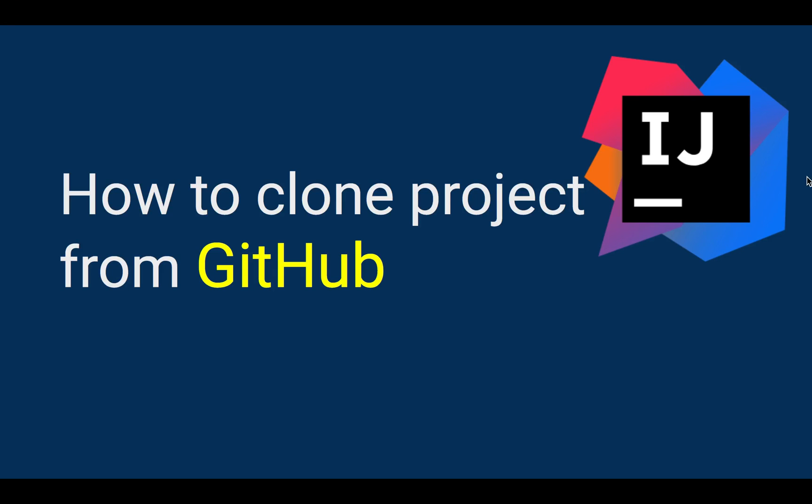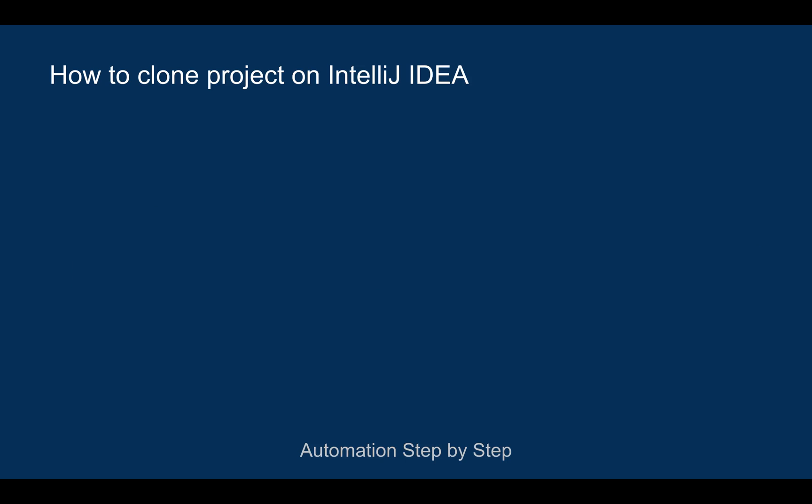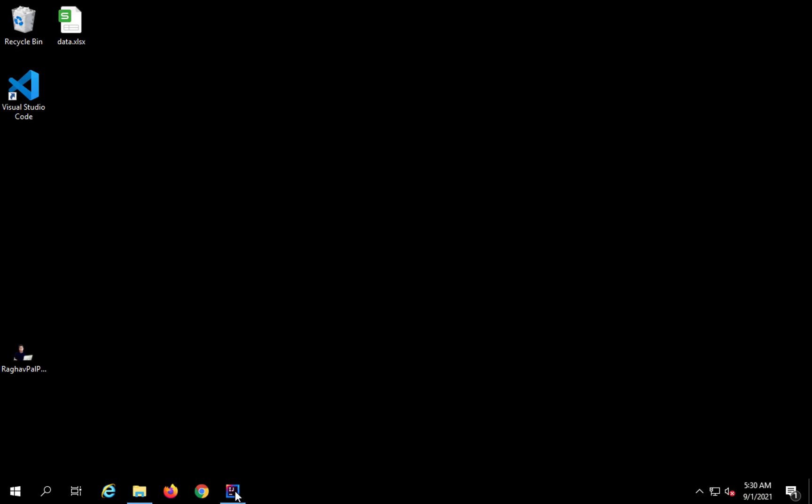Hello and welcome to this session. Today we are going to learn how to clone a project from GitHub on our IntelliJ IDEA. Let's get started. Step number one is we will open our IntelliJ IDEA. There are multiple ways how you can clone a project, so I will tell you all the ways. The first way is as you open your IntelliJ IDEA, you will get an option to get from VCS.